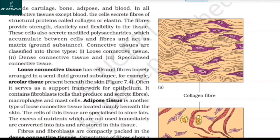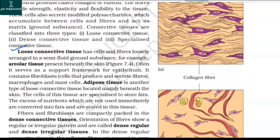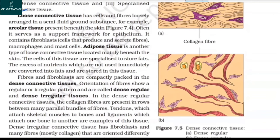Connective tissues are classified into three types: loose connective tissue, dense connective tissue, and specialized connective tissue. Loose connective tissue has cells and fibers loosely arranged in a semi-fluid ground substance; for example, areolar tissue present beneath the skin. It often serves as a support framework for epithelium. It contains fibroblasts, macrophages, and mast cells.